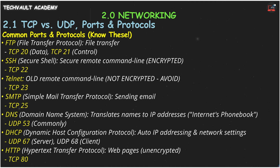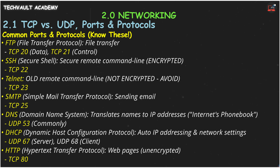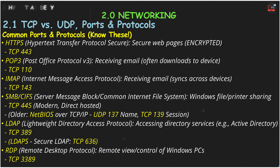For automatically getting an IP address and other network settings when you connect a device, there's DHCP, or Dynamic Host Configuration Protocol. DHCP servers use UDP port 67 and DHCP clients use UDP port 68. For browsing the web, the classic protocol is HTTP, or Hypertext Transfer Protocol — it fetches web pages but doesn't encrypt the data, using TCP port 80.